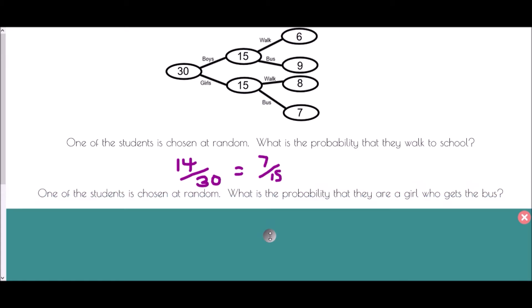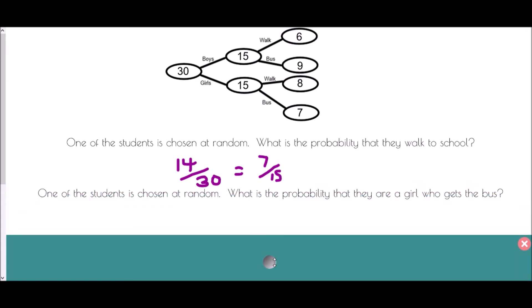And we go to our next question. One of the students is chosen at random. What is the probability that they are a girl who gets the bus? So again, one of the students is chosen at random. So because we are dealing with just the students, again, this is out of 30. Despite the fact that it tells us information here about it being a girl and getting the bus, that doesn't change the bottom here. Because what we are looking for are how many are girls who get the bus. Out of the 15 girls getting the bus, well, there are seven. And therefore, the probability of it being a girl who gets the bus is seven out of 30. And that one we can't simplify.